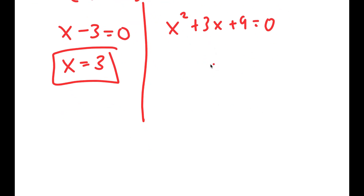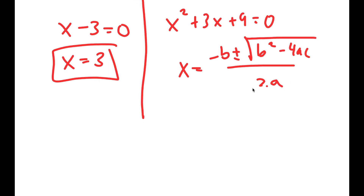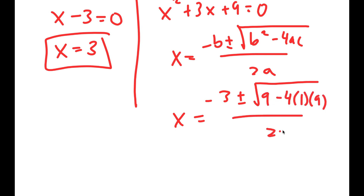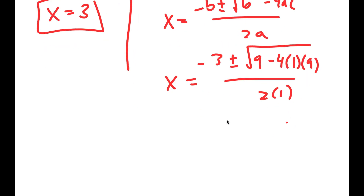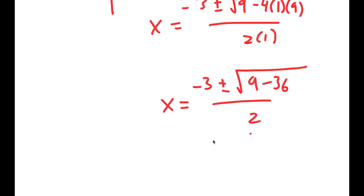Now for x squared plus 3x plus 9 equals 0, I can use the quadratic formula, which is negative b plus or minus the square root of b squared minus 4ac all over 2a. So this turns into negative 3 plus or minus the square root of 3 squared, which is 9, minus 4 times a, which is 1, times c, which is 9, all over 2 times 1.